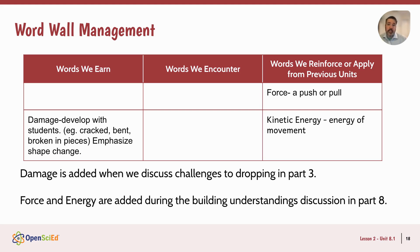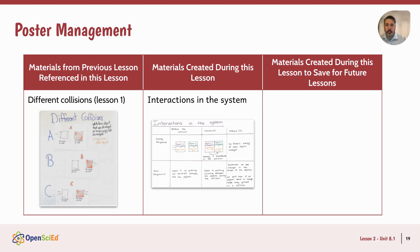We introduce a lot of words in this lesson. We earn the word 'damage' in part three, and you'll develop that definition with the kids using their language — help them understand damage means things change shape, using words like cracked, bent, broken in pieces. During the building understandings discussion in part eight, we reinforce words like 'force' from elementary school and 'kinetic energy' from the cups units, and add those to our word wall since we'll use them quite often. There are also a couple of posters: you'll bring in the different collisions poster from lesson one and develop the new interactions in the system poster, which we'll revisit in several lessons adding new information over time.